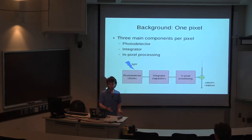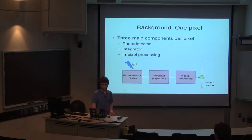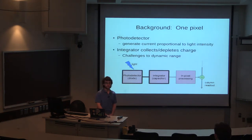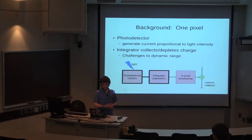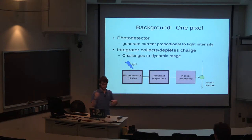Each pixel has three major components: the photoreceptor, an integrator — basically a capacitor — and some sort of in-pixel processing. The photodetector is basically a photosilicon, allowing you to take light in and convert it into electrons, which get pushed to the integrator. The integrator functions like a bucket in a rainstorm — you collect electrons, with small buckets and large buckets presenting trade-offs.